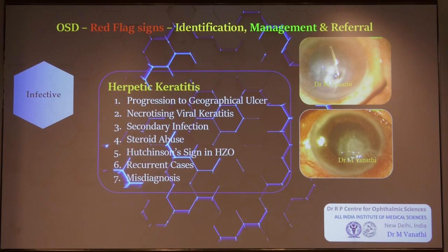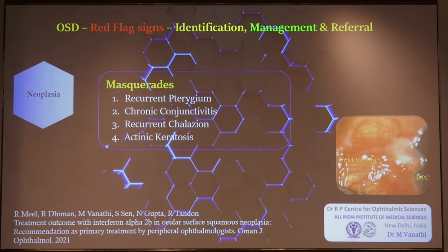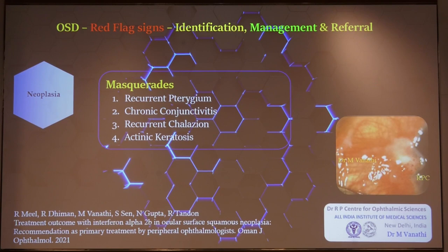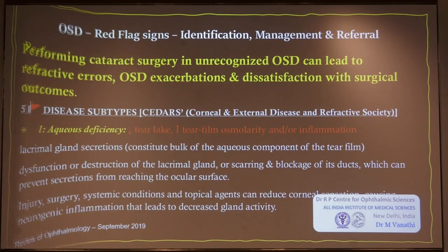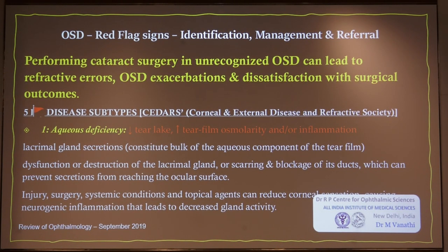Misdiagnosis plays a significant role here as well. Masquerades include recurrent pterygium — especially in elderly individuals with poor ocular surfaces — and chronic conjunctivitis, which could mask surface neoplasias. Recurrent chalazion is another scenario where you might miss malignancy of the meibomian gland ducts. Actinic keratosis and other limbal lesions could be precursors to surface neoplasias.